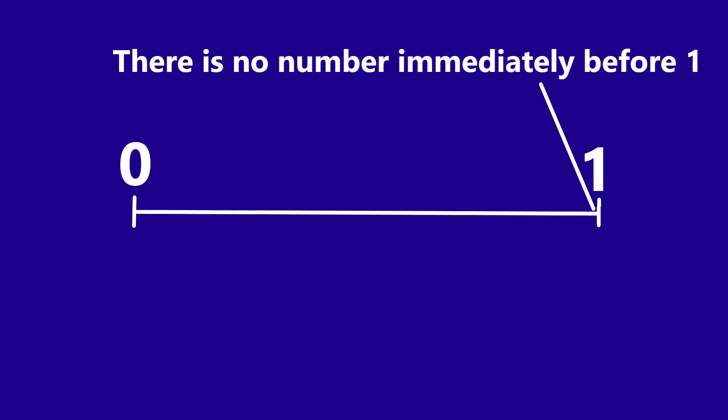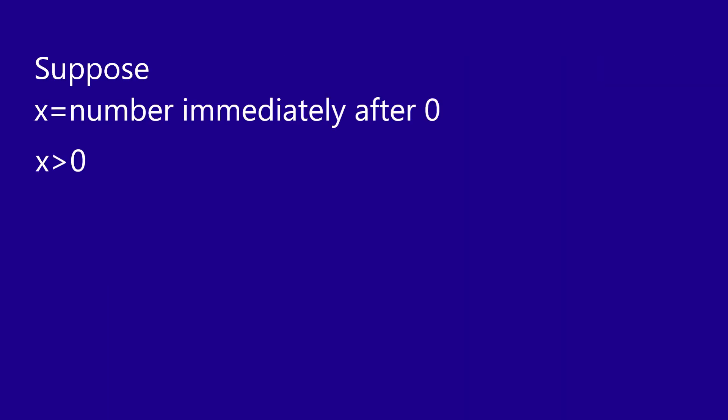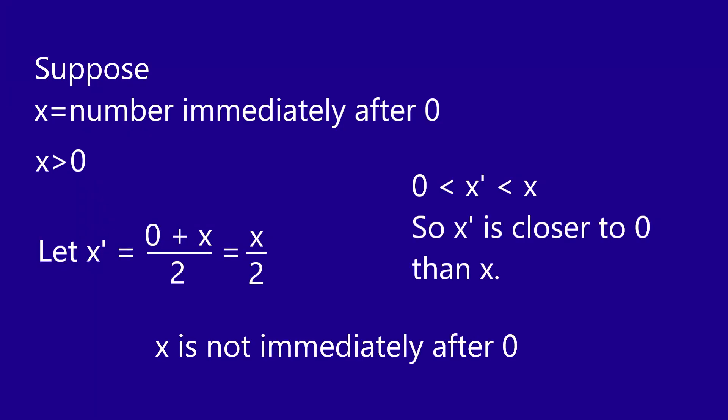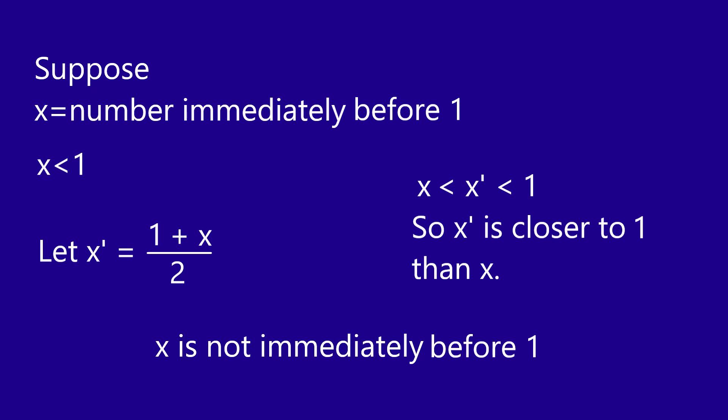And if that's not enough to mess with your brain's sensibility, how about this: there is no real number immediately before one or immediately after zero. This is because if you had the least positive real number, you could average that with zero and find a smaller positive real number. Similarly, if you had the number that was the closest number to one that's still smaller, you could average that number with one and find a number even closer to one that's still smaller than one.